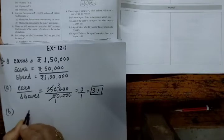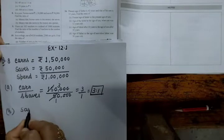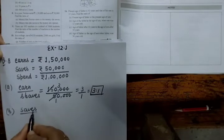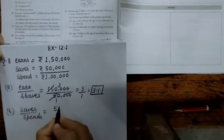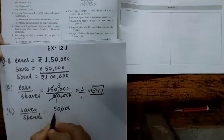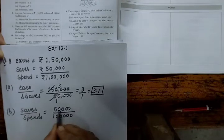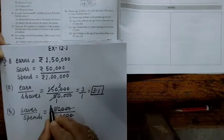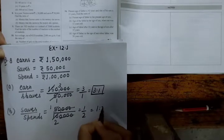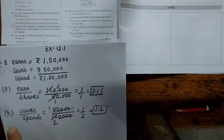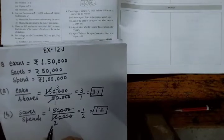For part B, money that she saves to the money she spends. Sema saves Rs. 50,000 and spends Rs. 1,00,000. The ratio is 50,000 upon 1,00,000. Cancelling zeros gives 1 upon 2. So the ratio of savings to spending is 1:2.